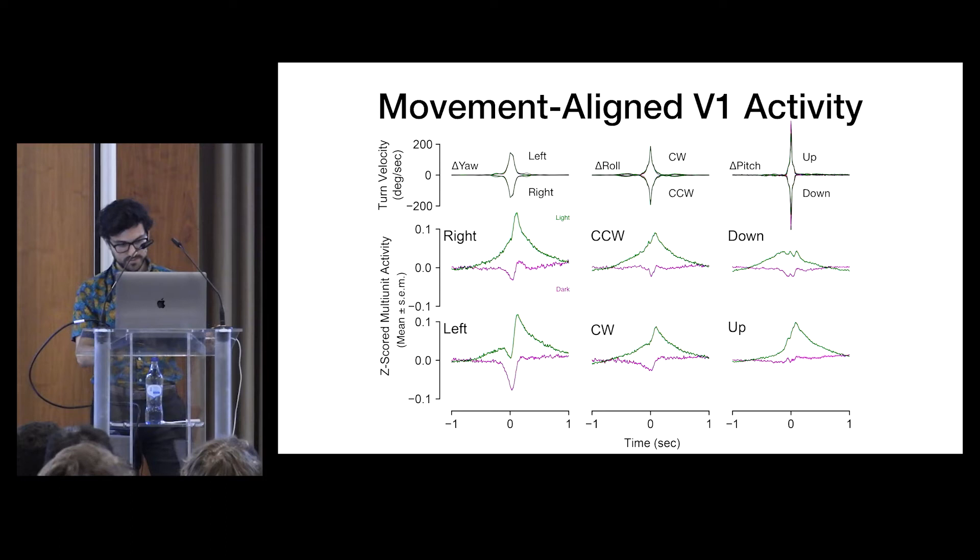So there's two things that I want you to note from this figure. The first is that in the dark, V1 appears to be suppressed during these orienting movements, whereas in the light it appears to be excited. And the second is that if you look at the time series, each of them appears to be slightly different, suggesting that there might be information in V1 about the direction that the animal is turning.